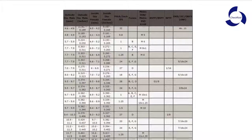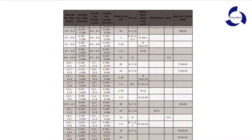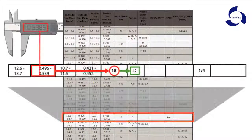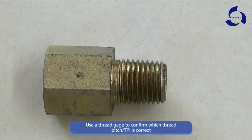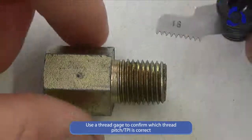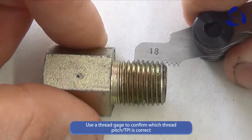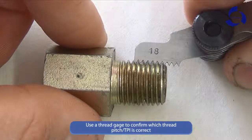Step 2: use Check Fluid's thread identification chart and locate the measured value from Step 1. The chart will provide possible thread pitches or TPIs, possible sealing forms, and diameters that could match your fastener. Use a thread gauge to confirm which thread pitch or TPI is correct.